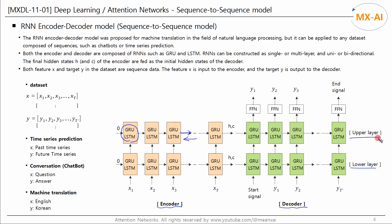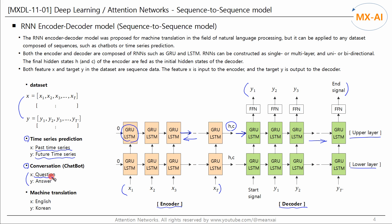This figure shows a two-layered unidirectional model. The final hidden states H and C of the encoder are fed as the initial hidden states of the decoder. Both feature X and target Y in the dataset are sequence data. The feature X is input to the encoder, and the target Y is output by the decoder. For time series forecasting, X can be a past time series and Y can be a future time series. For chatbots, X and Y are conversation data — X can be question sentences and Y can be answer sentences. For machine translation, X could be English and Y could be the translated Korean.